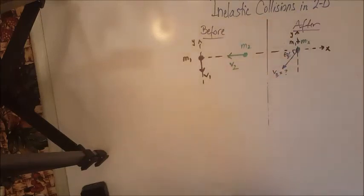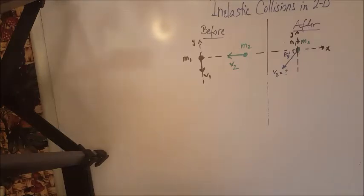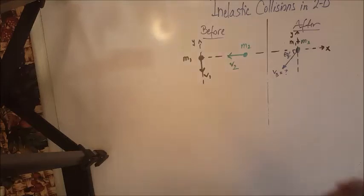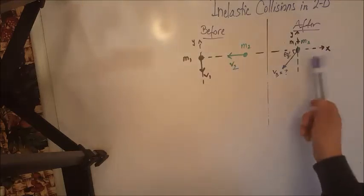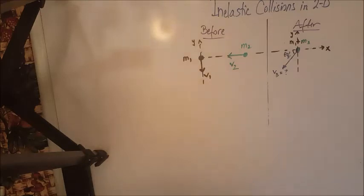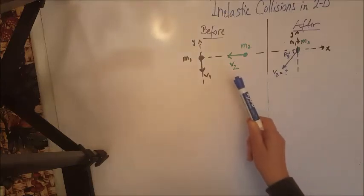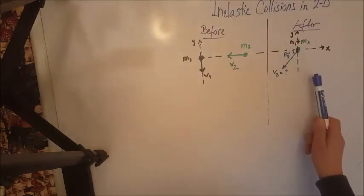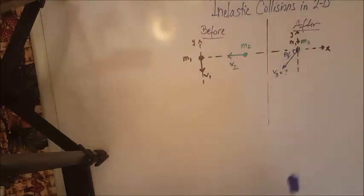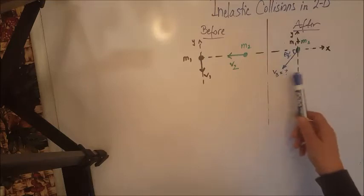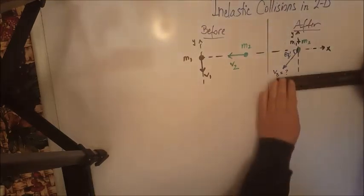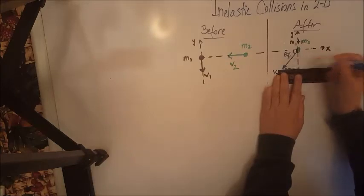This is an inelastic collision in two dimensions problem. We are going to follow the strategy introduced in the lecture slides, which means we need to apply the conservation of momentum — the total momentum before collision equals the total momentum after collision. We have to separate that into two parts since this is two-dimensional motion: total momentum on the X and total momentum on the Y. The only vector that must be resolved in this problem is V3, so we are going to carefully resolve V3 by drawing perpendiculars to the X and Y axes.